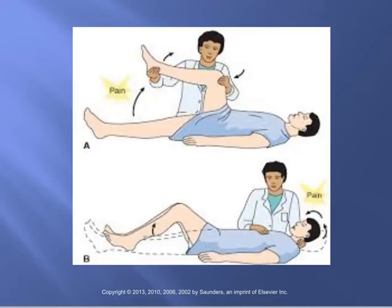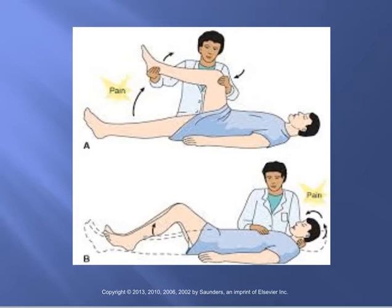Two key assessments are Kernig's and Brudzinski's signs. For Kernig's sign, the patient is supine with the hip and knee flexed at a right angle, and the knee is slowly extended — resistance or pain during extension is a positive Kernig's. For Brudzinski's sign, the examiner places one hand behind the patient's head and the other on the chest to prevent rising, then lifts the head — reflex flexion of the hips and knees after passive flexion of the neck constitutes a positive Brudzinski's sign.